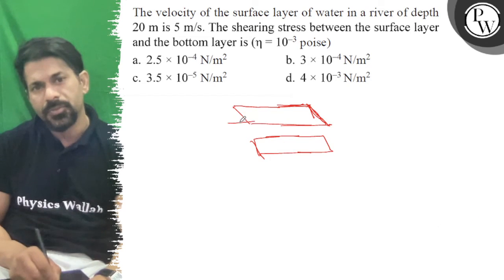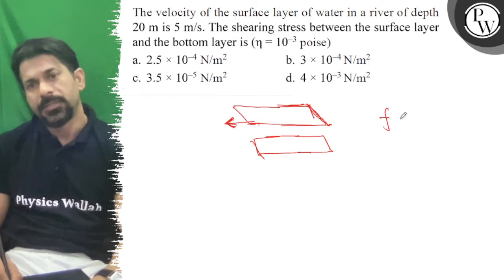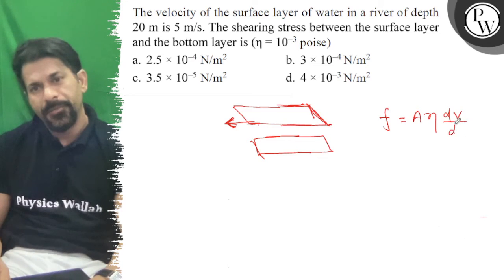This is the viscous force. The viscous force is equal to, given by, A (area) times eta into velocity gradient dv by dx.